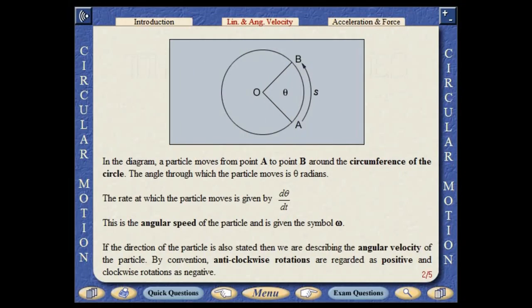In the diagram, a particle moves from point A to point B around the circumference of the circle. The angle through which the particle moves is theta radians.